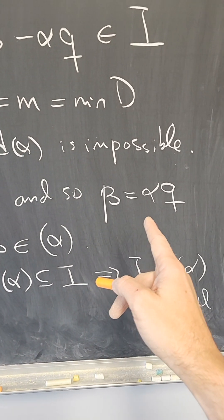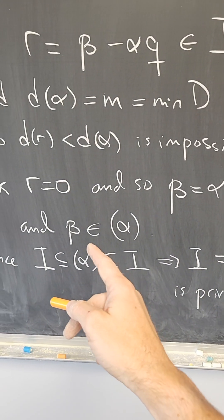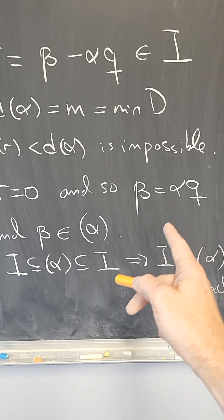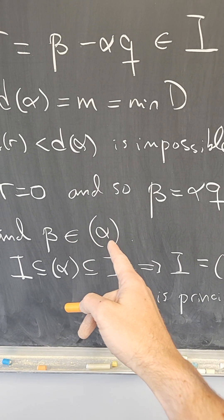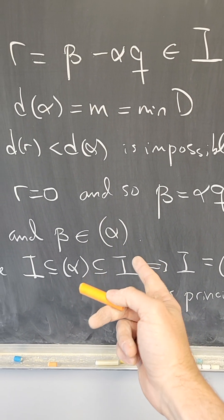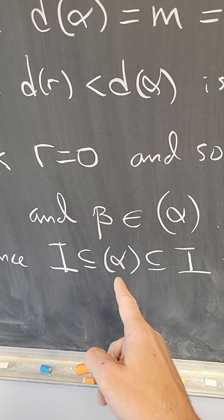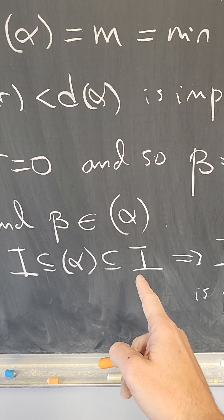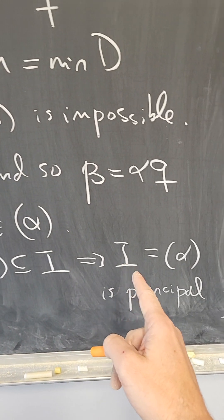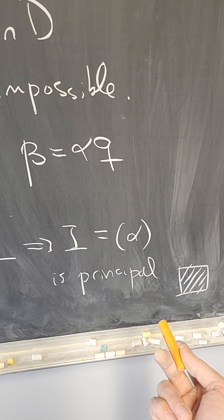And therefore beta is equal to alpha Q, but if beta is equal to alpha Q, then beta is in the ideal generated by alpha. And therefore we have that the ideal is contained in the ideal generated by alpha, and alpha is contained in the ideal, and therefore the ideal is principal like we wanted to show.